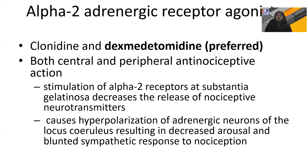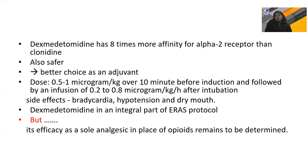First are the alpha-2 adrenergic receptor agonists: clonidine and dexmedetomidine. They are both central and peripheral antinociceptive. They stimulate alpha-2 receptors in the substantia gelatinosa and cause hyperpolarization of adrenergic neurons in the locus coeruleus, acting on both ascending and descending pain pathways. Dexmedetomidine has eight times greater affinity for alpha-2 receptors than clonidine and has become an integral part of the ERAS protocol. However, its efficacy as a sole analgesic in place of opioids remains to be determined.